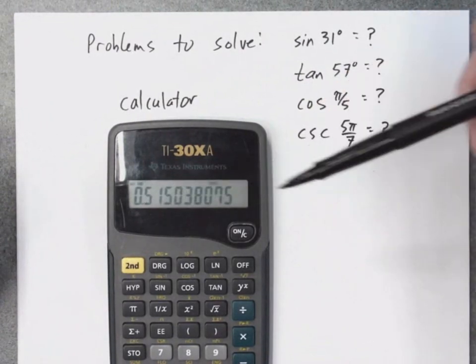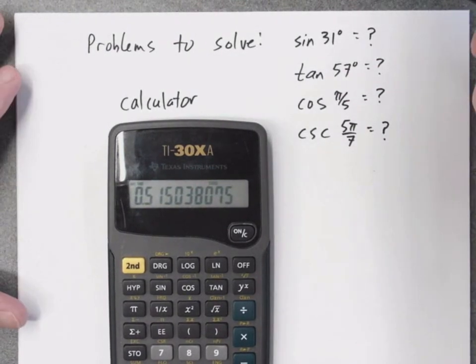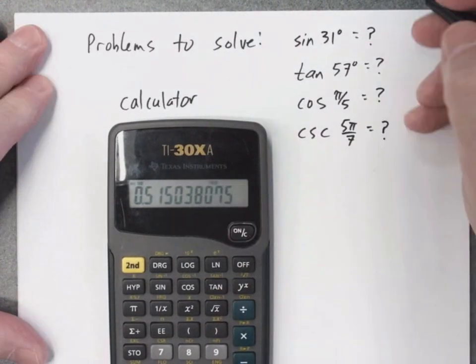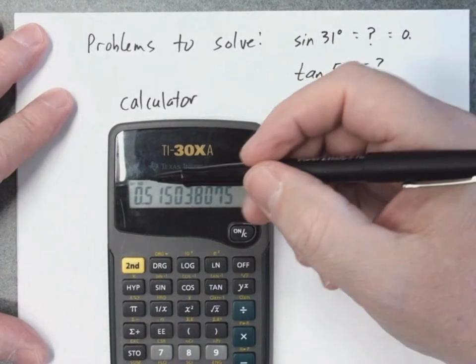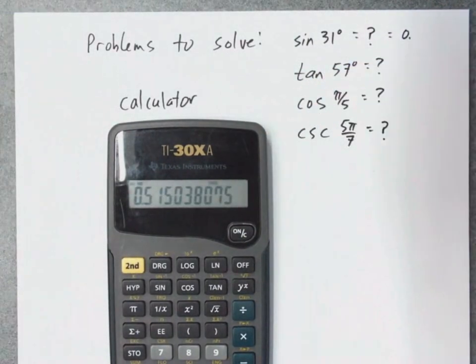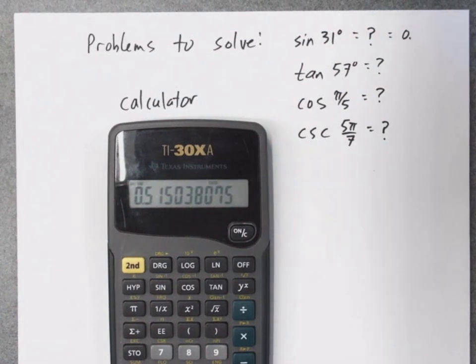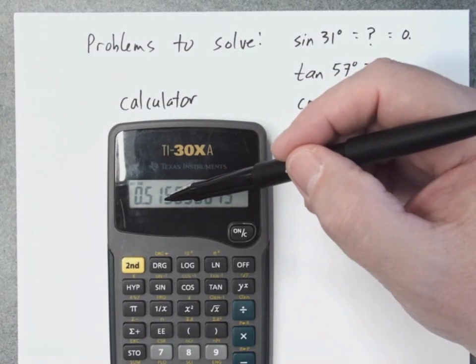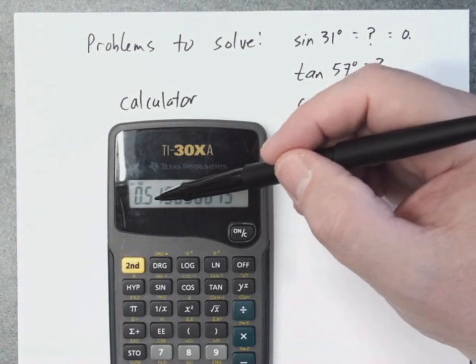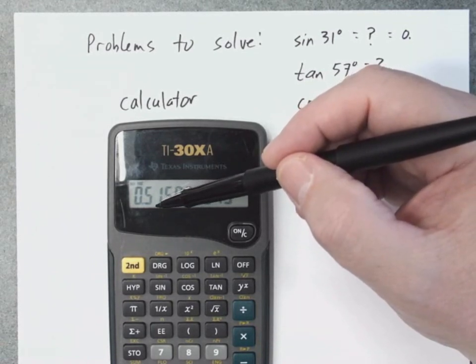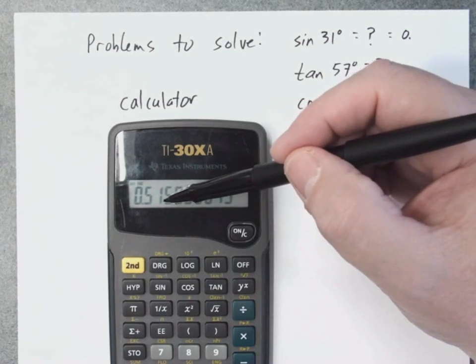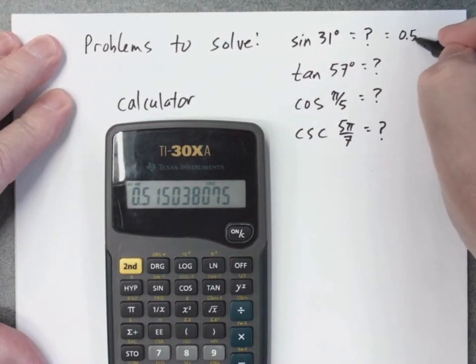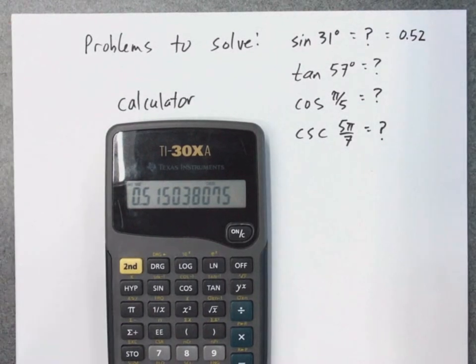So look at this answer: 0.515038, a whole bunch of digits, a whole bunch of decimal places. Since instructions for me, I'm saying I was told to round to two decimal places, so I'm going to say 0.51 are my two decimal places. But hopefully you remember the rules about rounding. You always look to the third decimal, and you say if that third decimal is five or greater, it causes the second decimal place to bump up. Well, since this is five, it gets bumped up. Therefore, the answer to this should be the sine of 31 degrees is 0.52.